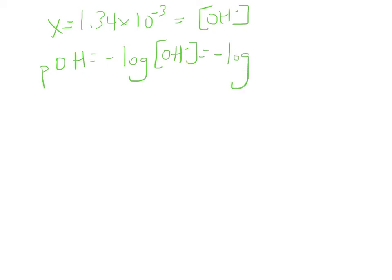Okay, so if X is equal to 1.34 times 10 to the negative 3, and X is equal to the concentration of OH minus, the question is asking for pH. So first thing I'm going to find is pOH. If pH is the negative log of H3O plus, pOH is the negative log of OH minus. So that's going to be the negative log of 1.34 times 10 to the negative 3. I'll give you a second, type that into your calculator.